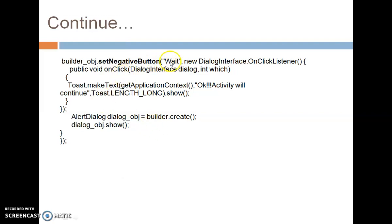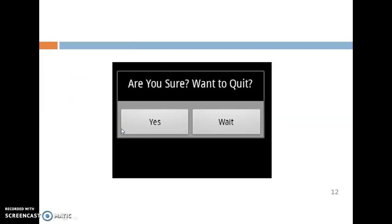For the negative button: builder_obj.setNegativeButton("Wait", new DialogInterface.OnClickListener()) with an onClick handler that executes a Toast message saying "Okay, activity will continue." Then call show() to display the Alert Dialog. The output shows the message "Are you sure want to quit?" — clicking Yes quits the activity, and clicking Wait displays the corresponding toast message.